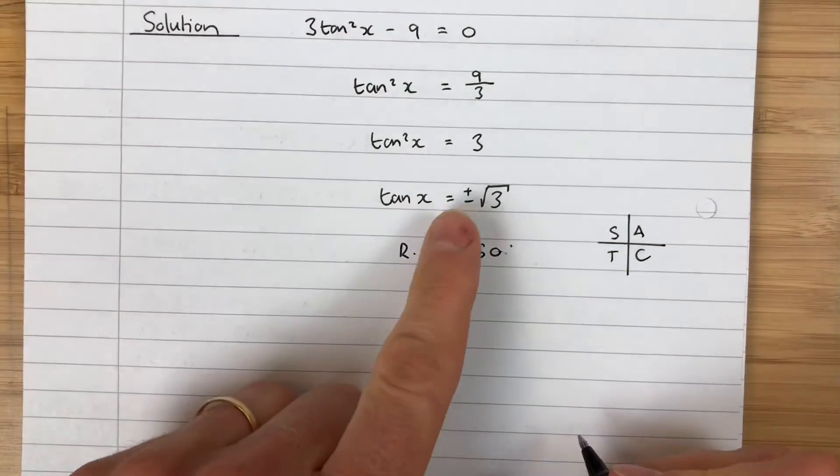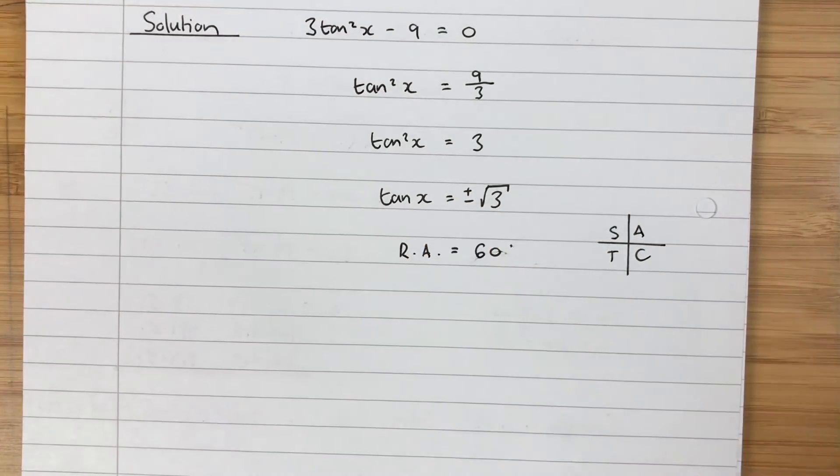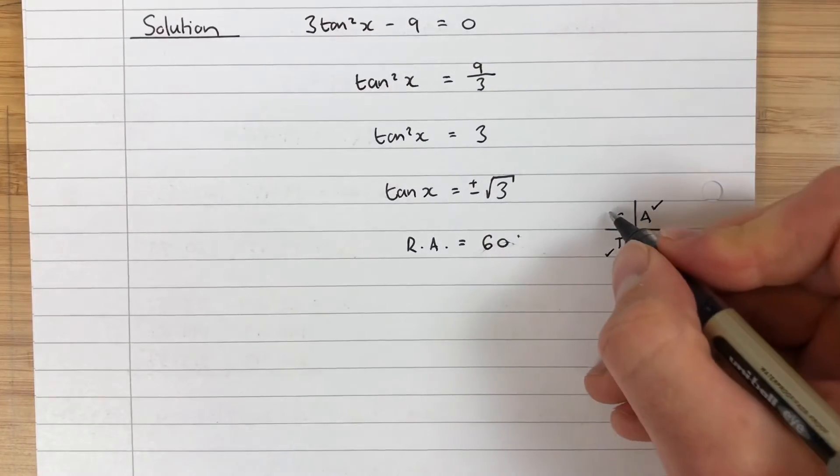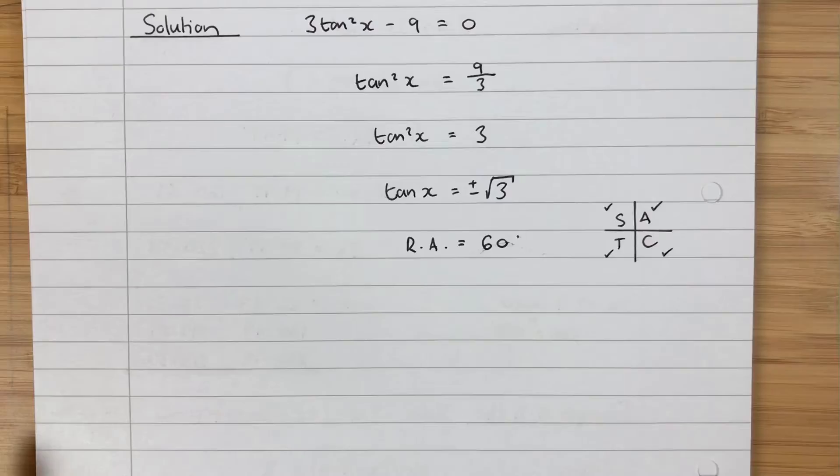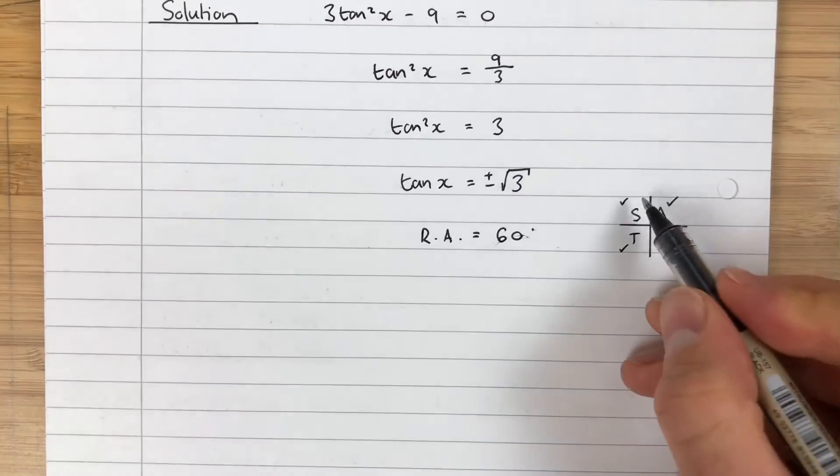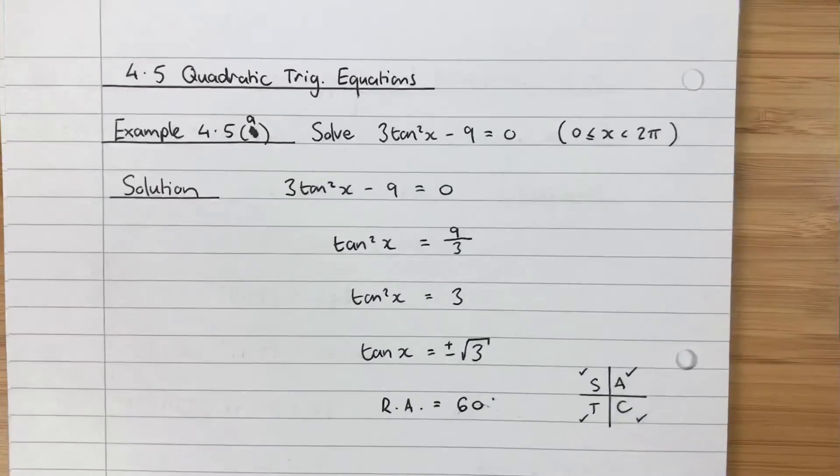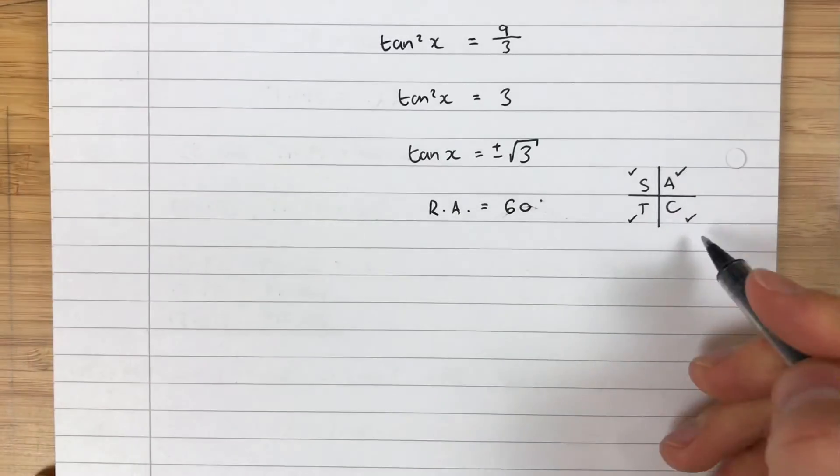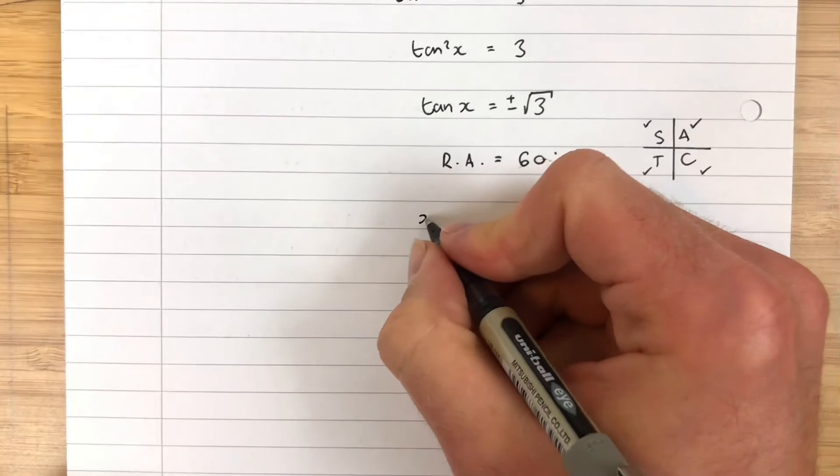We'll go to our quadrant diagram. SATC. Now it's positive and it's negative, both are possible. Tan is positive in these quadrants and negative in these quadrants. So we actually have a solution in all four quadrants. So between 0 and 360 or 0 and 2π we will have 1, 2, 3, 4 solutions.